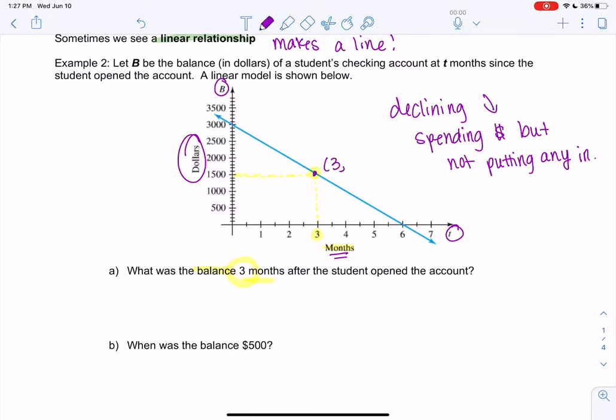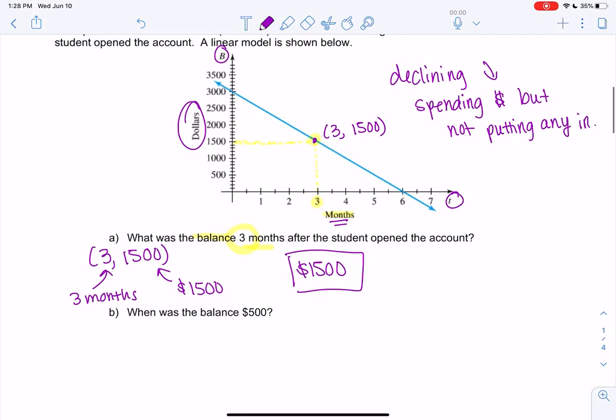So I would describe this point as 3 comma 1500. The horizontal number always comes first. So that means we have three months and 1500 dollars. That's an ordered pair or a point on the graph. So we're basically just doing the opposite of what we did above. So after three months, there's 1500 dollars.